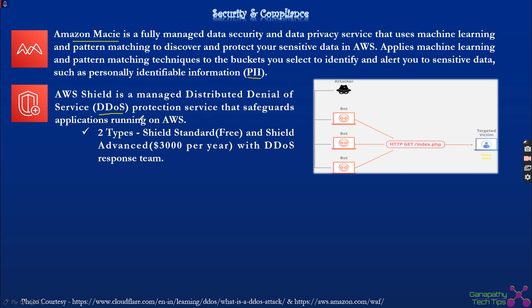To avoid these types of attacks, AWS provides AWS Shield. Shield is a protection mechanism against DDoS-type attacks and comes in two tiers: Shield Standard and Shield Advanced. Shield Standard is offered free of cost. Shield Advanced charges $3,000 per year but includes a dedicated DDoS response team, and if you face a DDoS attack, they will refund the money as well.